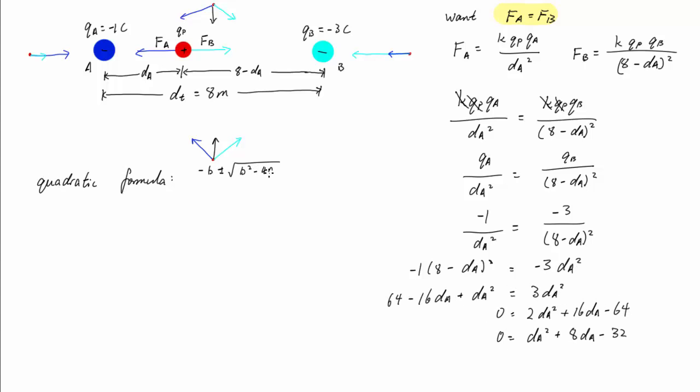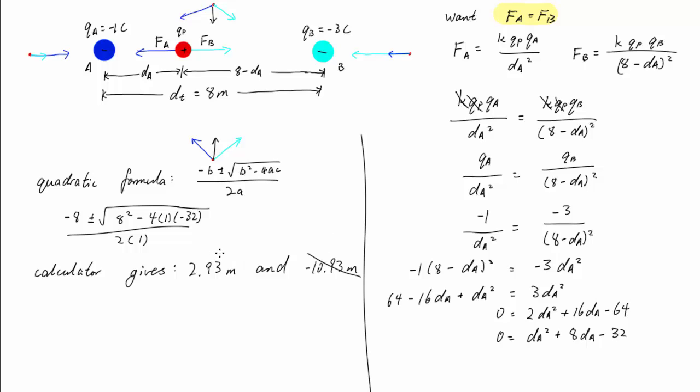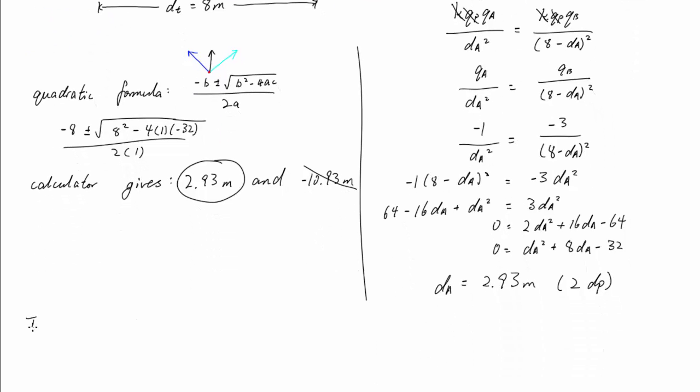Using the quadratic formula, you get two answers for dA: 2.93 meters and negative 10.93 meters. Negative 10.93 meters is located to the left of particle A, which we have already previously eliminated and said was impossible. So the correct answer is 2.93 meters. Therefore, the positive charge must be located 2.93 meters to the right of particle A for it to remain stationary.